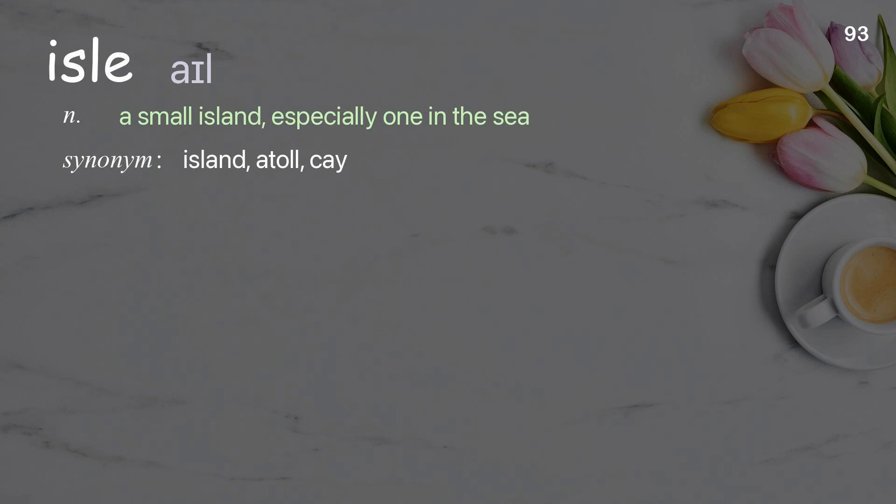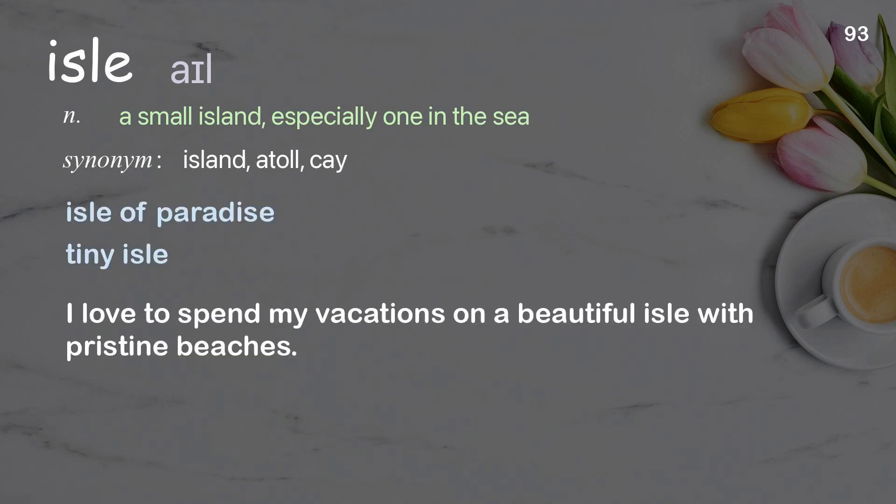Isle: a small island, especially one in the sea. Examples: olive paradise; tiny isle. I love to spend my vacations on a beautiful isle with pristine beaches.